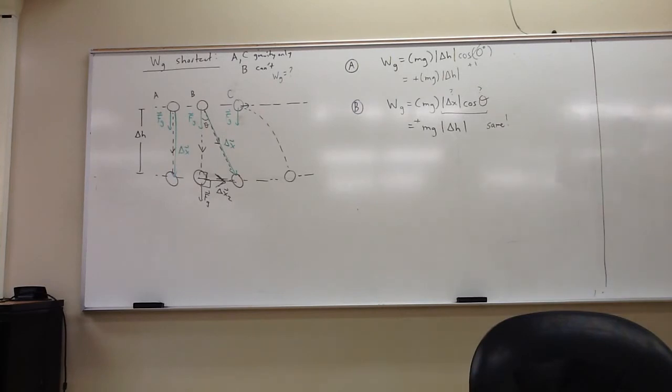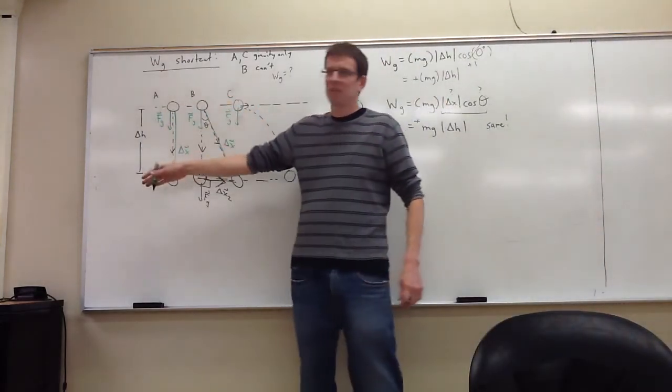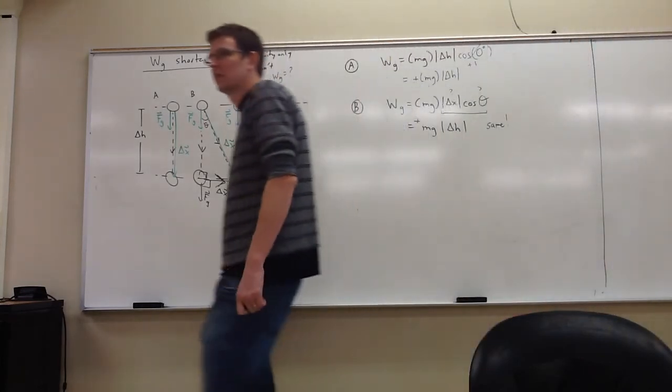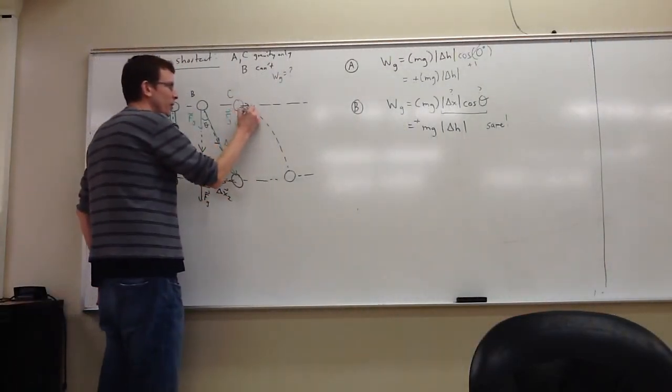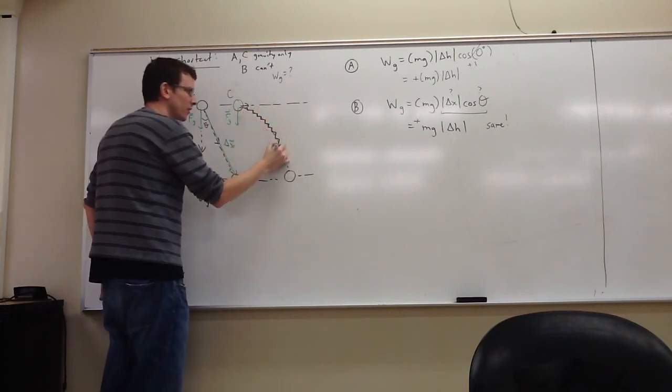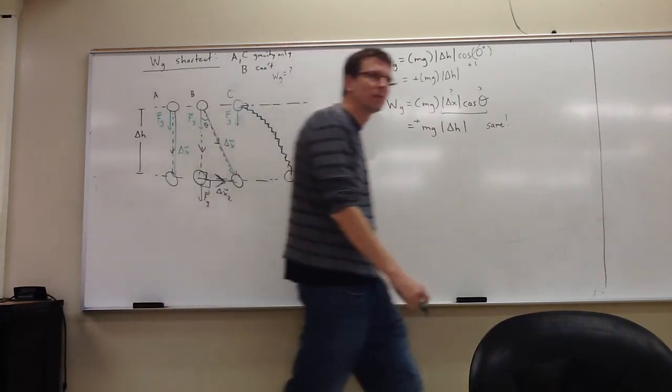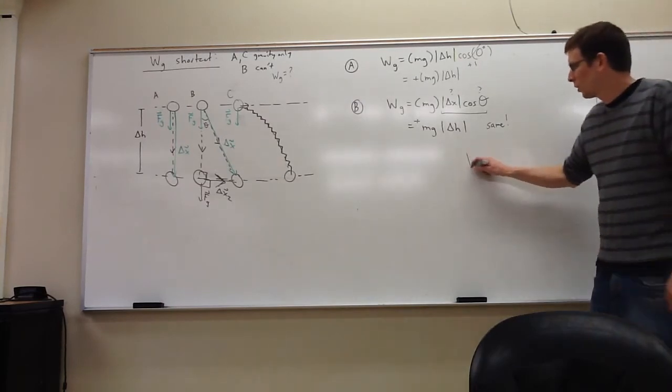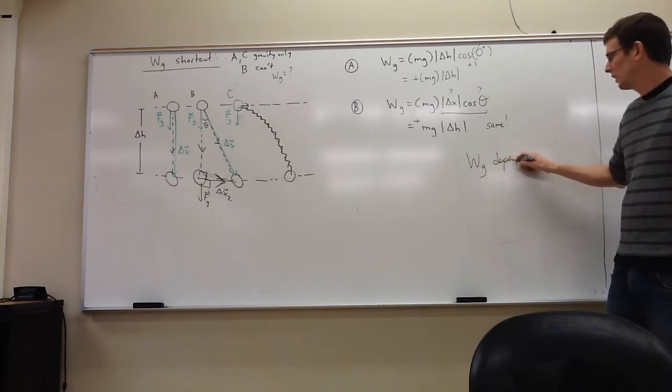It only cares about the vertical part. When you are moving vertically, gravity is either helping you in this case or possibly hurting you. It doesn't care about the sideways part at all. And so, A and B, they both have the same vertical motion, so they have the same work done. Well, let's take a look at path C. Path C, or any path, can be thought of as sideways parts and vertical parts. The work done on path C is the same thing.